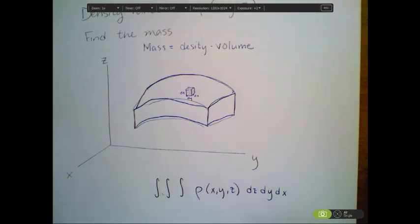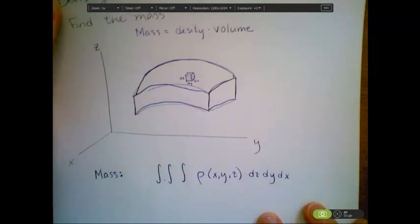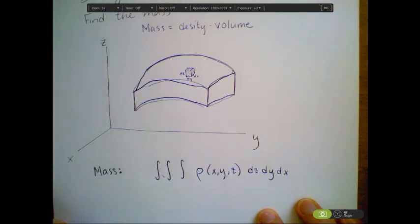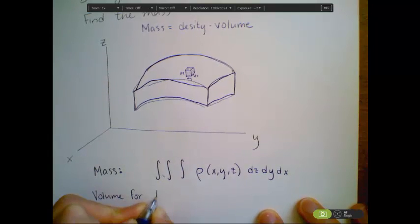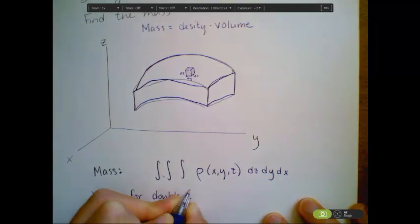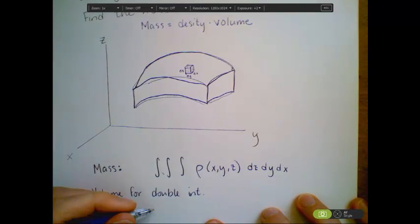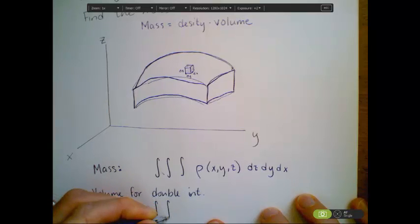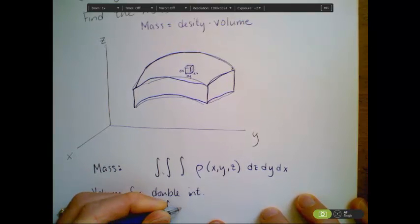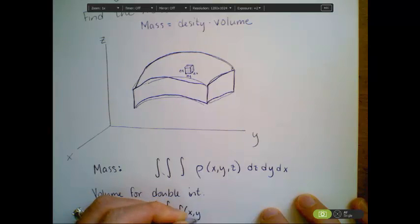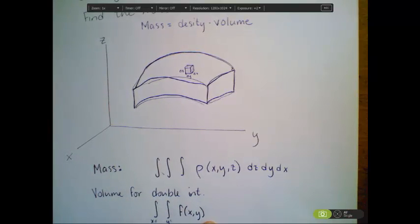But notice how this differs. So this is finding mass. Notice how this differs from what we talked about previously. Previously, we just talked about finding volume. So volume for double integrals. In that case, we were talking about an integral where x had some bounds, where y had some bounds, and then we had some function that was just a function of x and y, which was actually equal to our height.